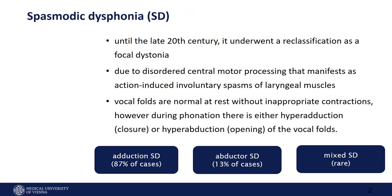The adductor spasmodic dysphonia, if it is a clear adductor type, is the one you know with the cramps of the voice — a very hard combination. But interestingly, if you do laryngo-stroboscopy in these patients, you usually have a clear, regular vibration of the vocal folds. The classical definition considers it a speaking task-induced problem, not a singing one. The typical adductor spasmodic dysphonia patient can sing.